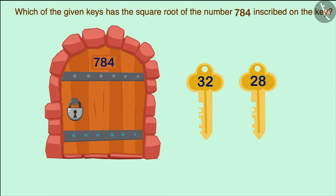Now only 2 keys are left, 32 and 28. Now we have to select one of these 2 keys on which the inscribed number will be square root of 784.